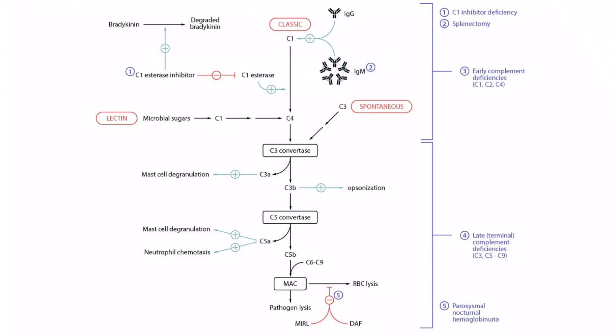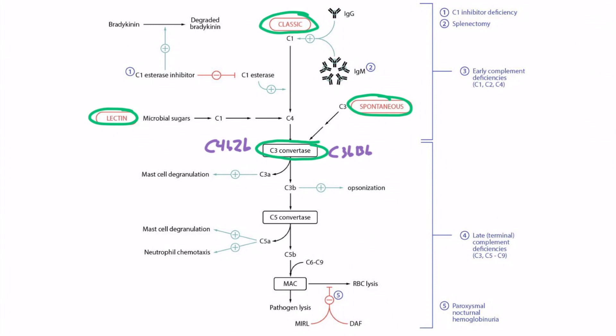This diagram demonstrates the complement system. There are three ways to trigger it, shown with red boxes: the classic pathway, the lectin pathway, and the spontaneous or alternative pathway. All three pathways ultimately lead to the creation of a C3 convertase. You may come across diagrams that overcomplicate this — for example, the classic and lectin pathways create C4B2B, and the alternative pathway creates C3BB, both of which are C3 convertases — but those are extraneous details.